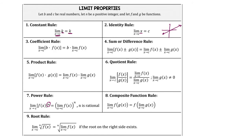If you go over to x equals 4 and then go up, the y value is 4 as well. That's why you have y equals x. If you trace along from the left and the right, you get the same y value.